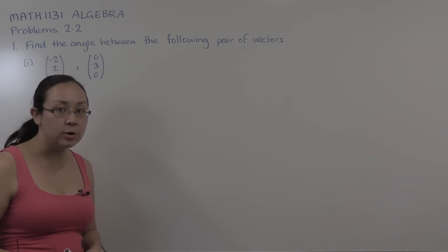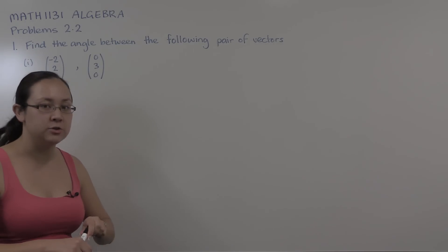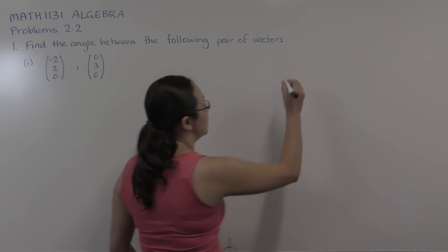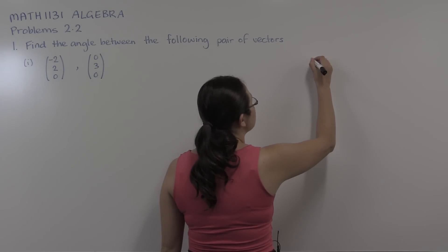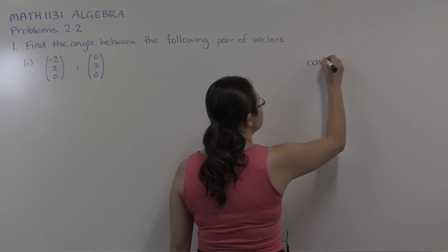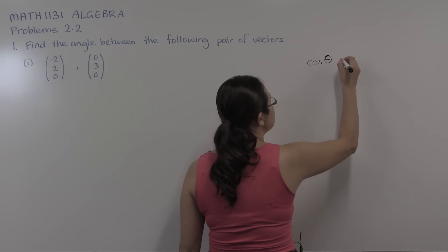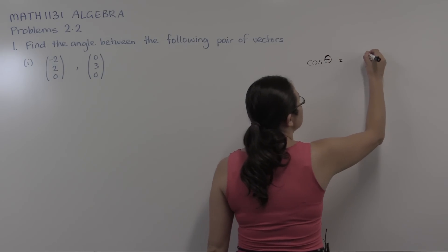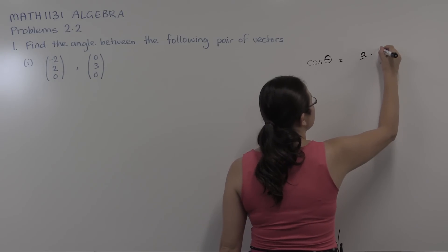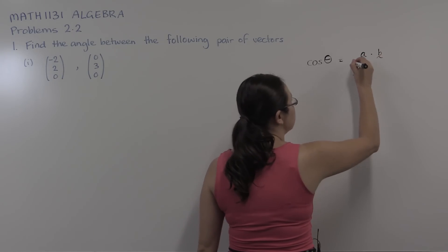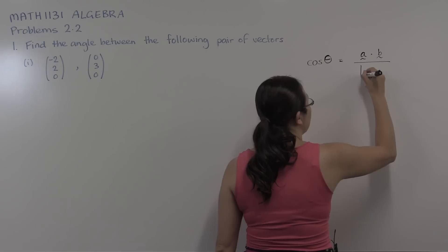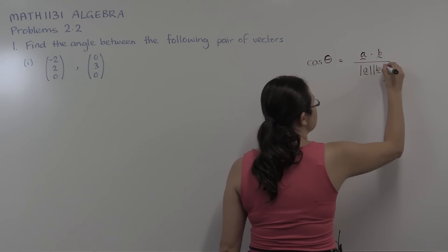Now we have a result that helps us work out the angle between two vectors. It comes from the cosine rule, and our result is that cosine of the angle between two vectors is equal to the dot product of two vectors divided by the product of the lengths of those two vectors.